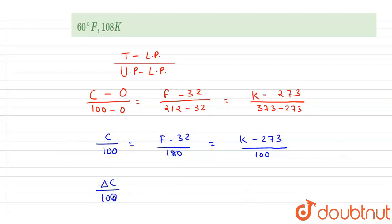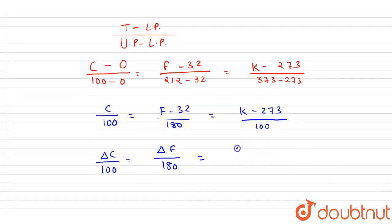If you see, this constant will get cancelled out and you will write change in temperature because if I talk about the change, this constant will get subtracted right? It will be with the two temperatures, so it will be change in Kelvin temperature by 100.